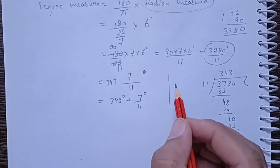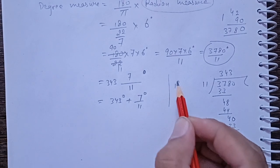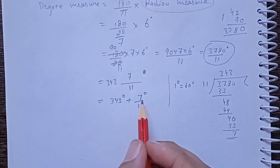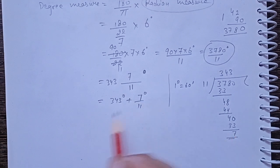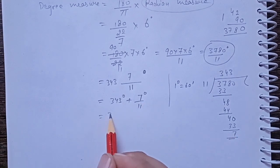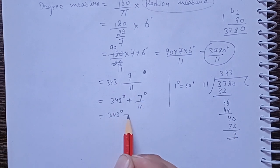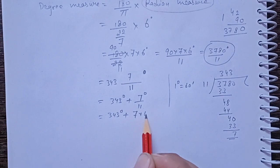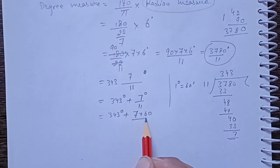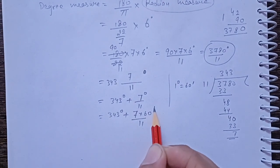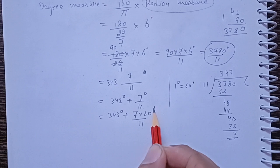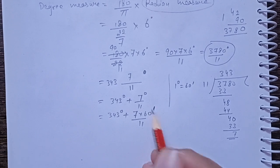We know that 1 degree is equal to 60 minutes. So we convert the fractional degree into minutes: 343 degrees plus 7 into 60 divided by 11. This gives the full value in minutes.